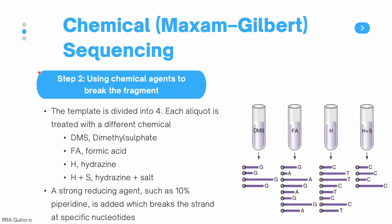The next step is to use chemical agents to break apart the fragment. The template DNA, which has already been labeled, is divided into four aliquots. Each aliquot is treated with a different chemical. We have dimethyl sulfate (DMS), formic acid (FA), hydrazine (H), and a combination of hydrazine and a salt (H plus S).